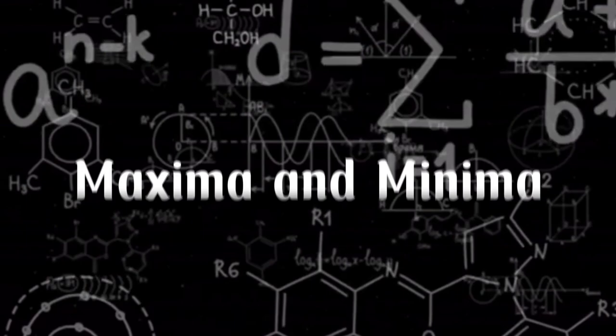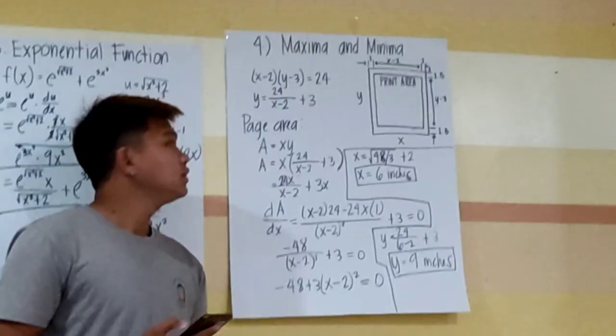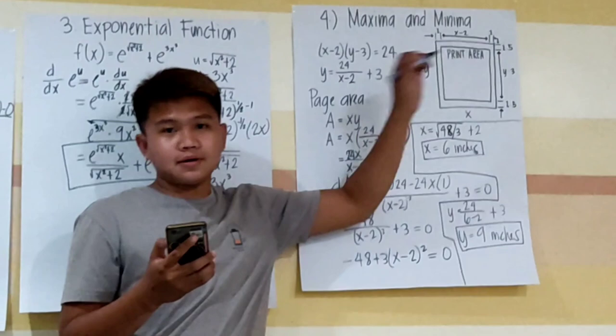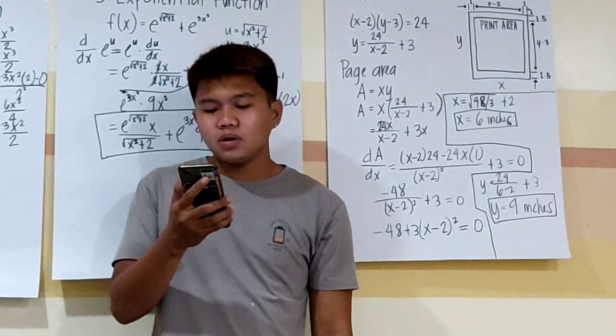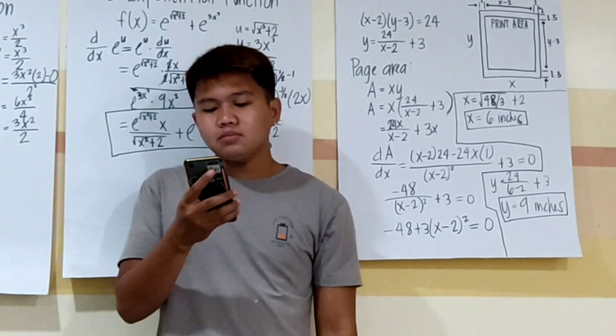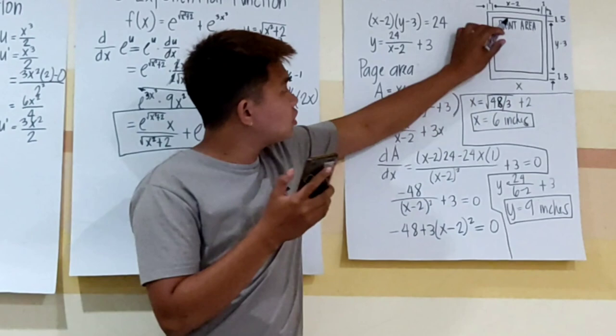That is the final answer for the exponential function. The last one is the maxima and minima problem. A page is to contain 24 square inches of print. The margins at top and bottom are 1.5 inches, and at the sides is 1 inch. Find the most economical dimensions of the page.